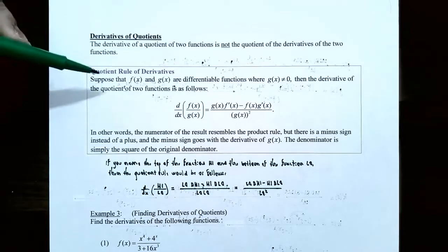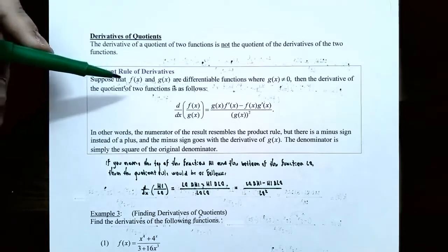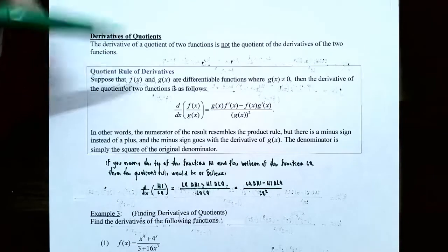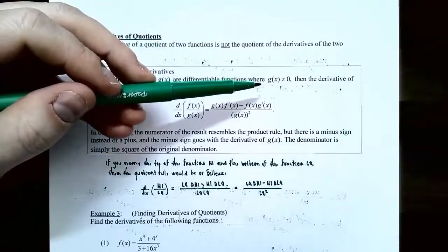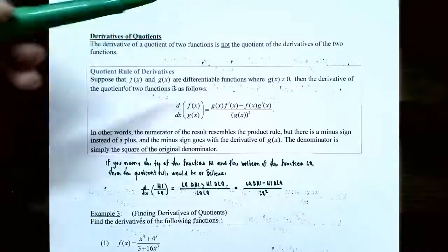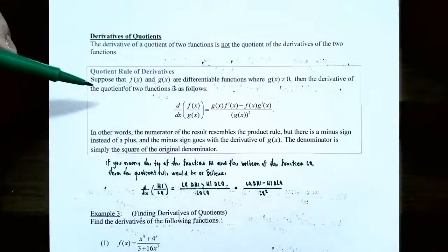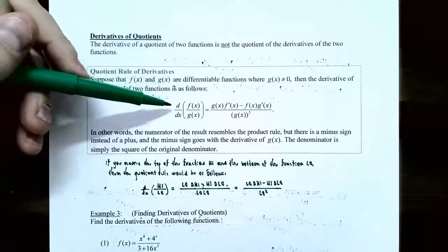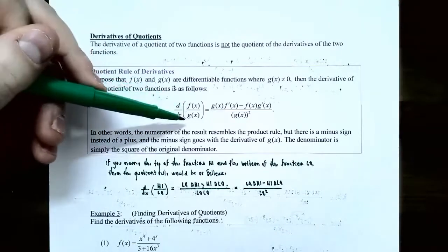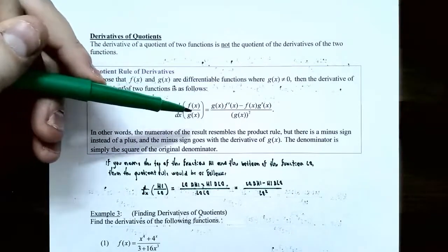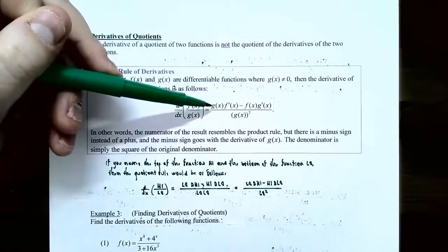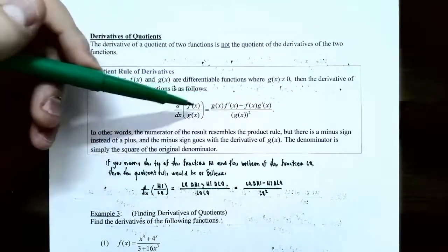Suppose that f of x and g of x are differentiable functions — so that means f prime and g prime exist — where g of x cannot be zero, because g of x is in the denominator. Then the derivative of the quotient of two functions is as follows. The derivative, d/dx, of f of x over g of x is this formula. You take the denominator, g of x, and multiply by the derivative of the numerator, f prime of x.